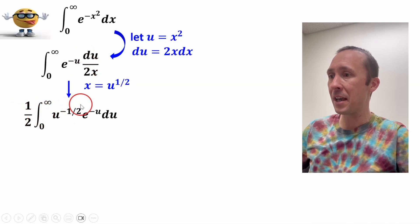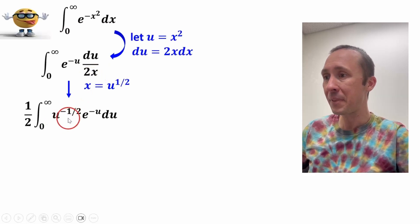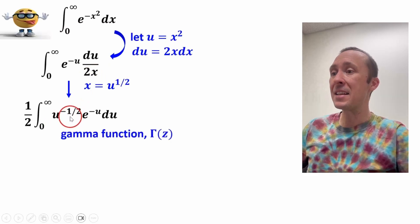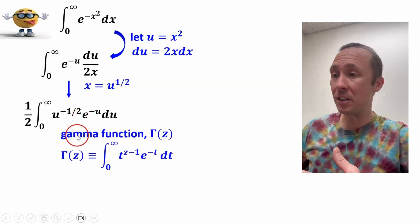This one-half came out, and rather than saying u to the one-half in the denominator, we said u to the negative one-half right here. Now, my friends, this looks just like the gamma function.